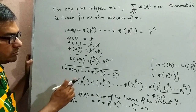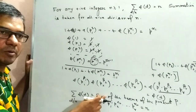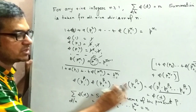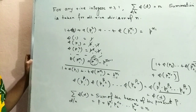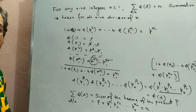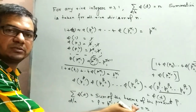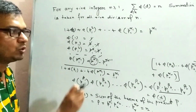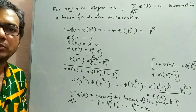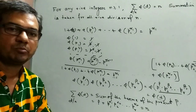So the first bracket equals p1^alpha1, the second equals p2^alpha2, and the last equals pr^alphar. Their product is n. So this is the complete proof of the property.